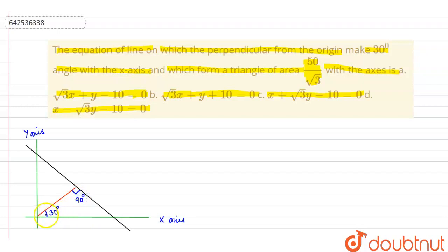So we know that this is 90 degrees, this is 30 degrees, so this will be 60 degrees. Let us assume that the equation of our required line is y equals mx plus c.